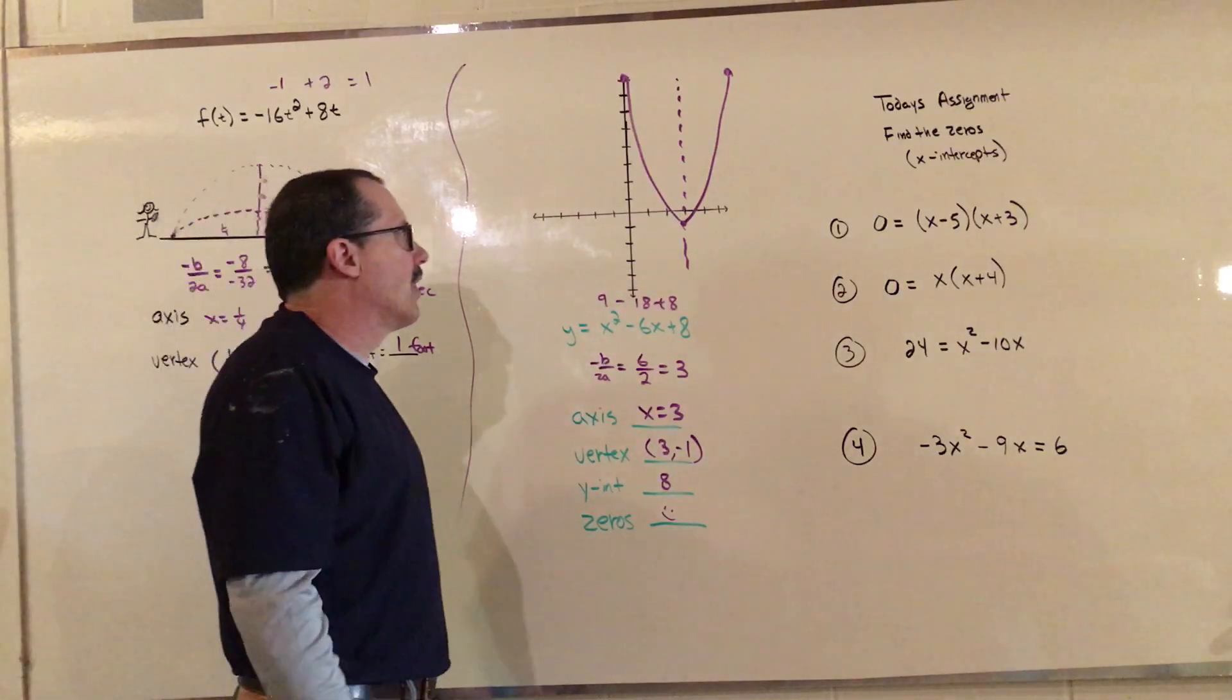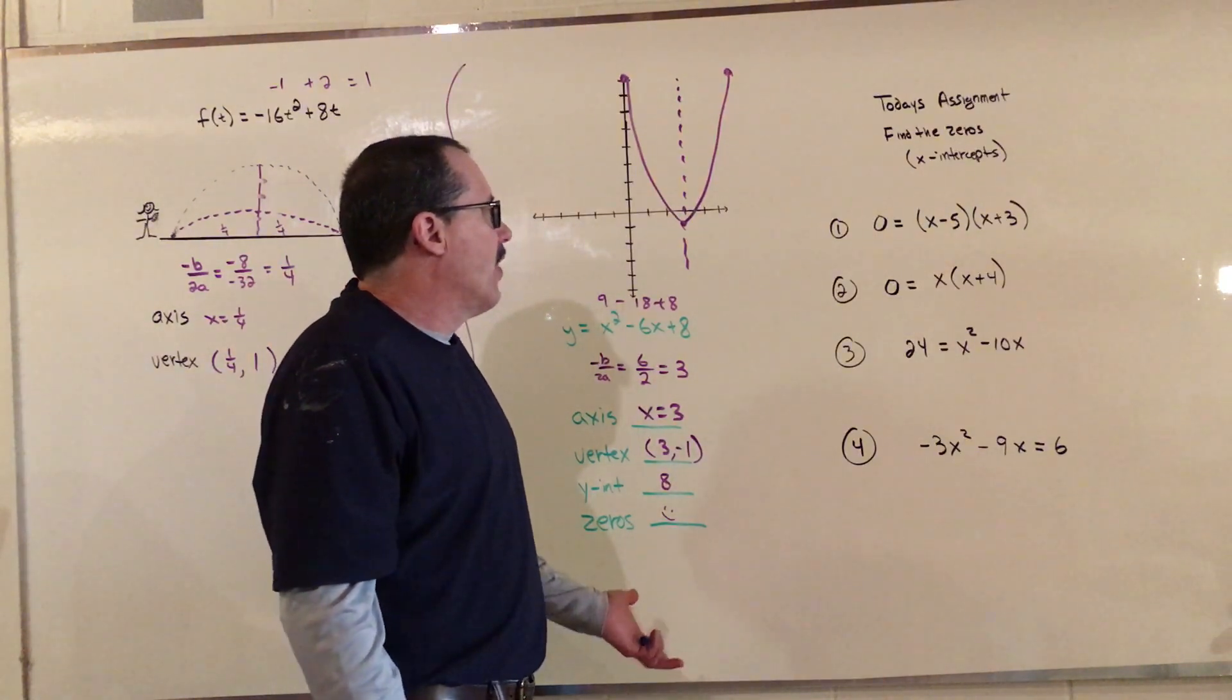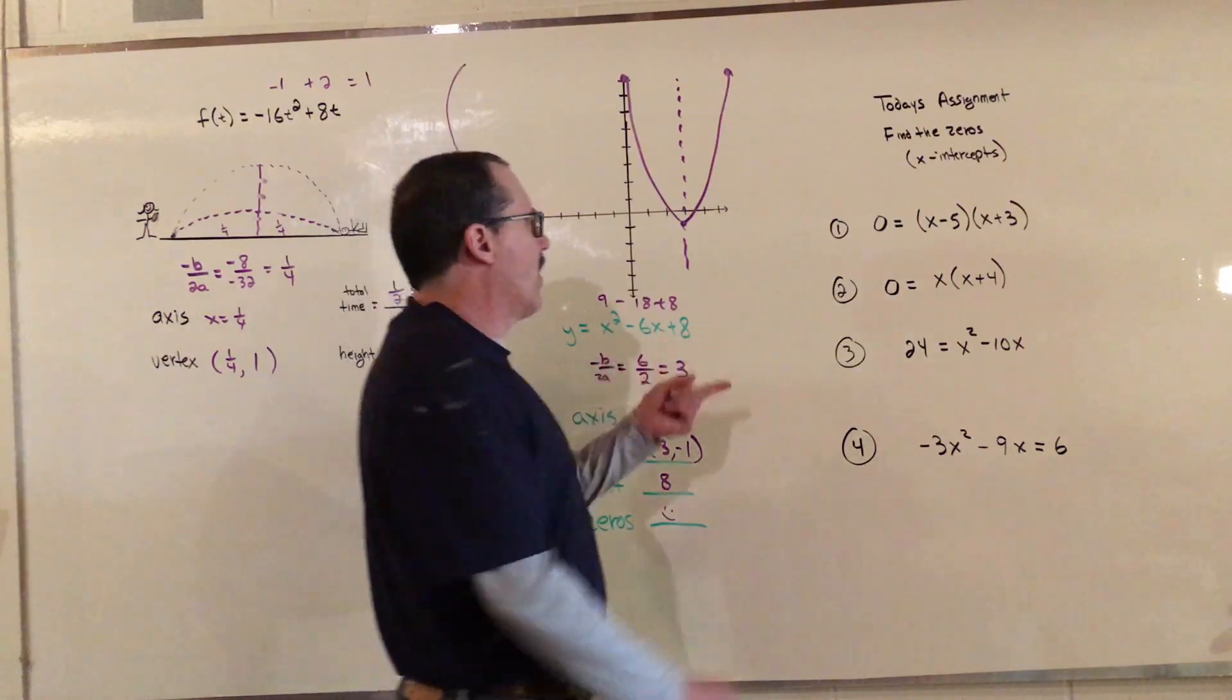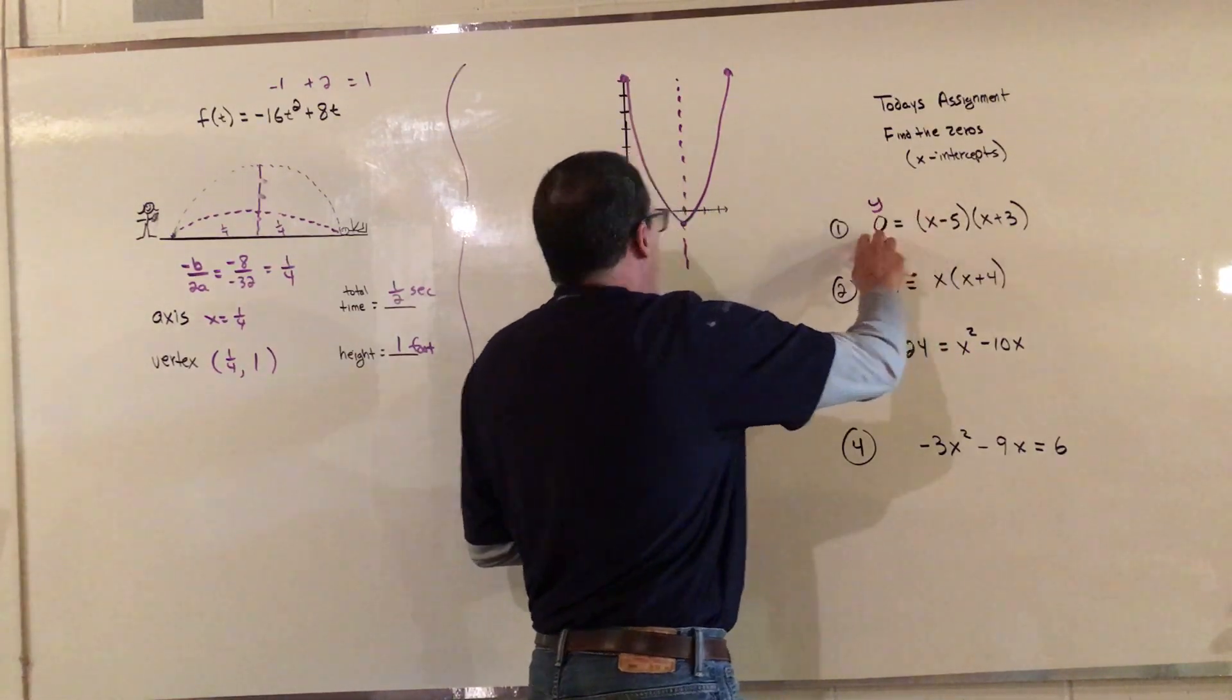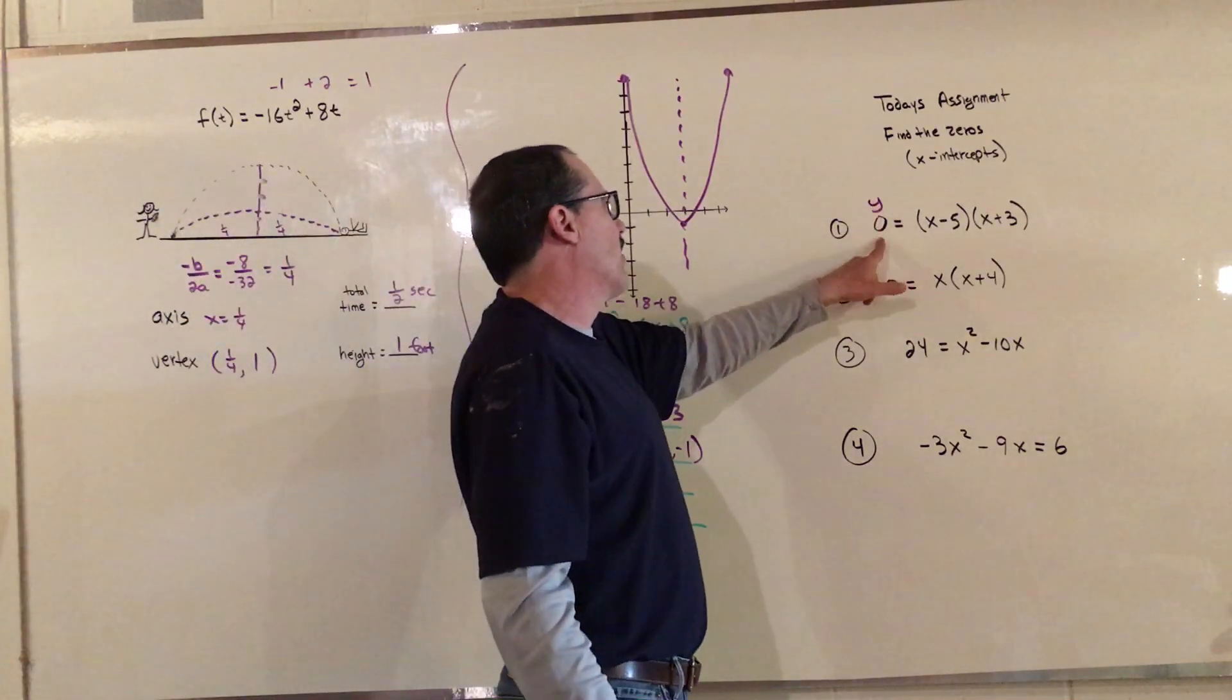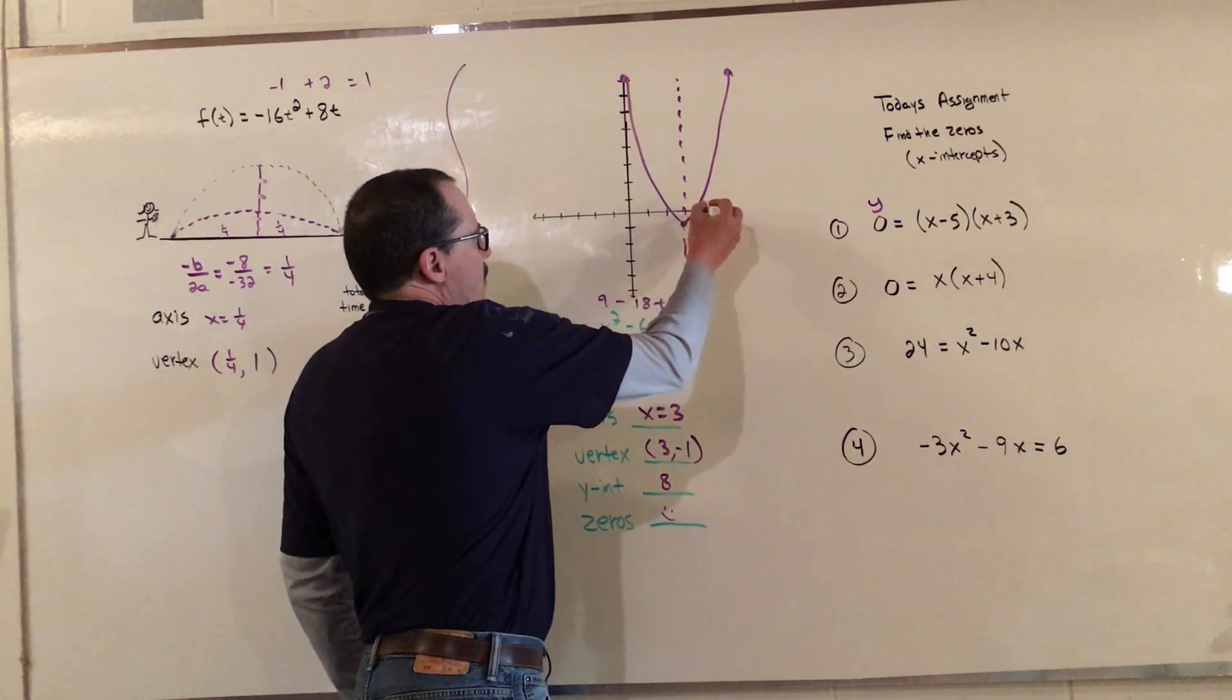I think today's assignment is going to be pretty hopefully easy for you guys. All you have to do is find the zeros, which is the x-intercept. In the book they're going to write 0 equals x minus 5 times x plus 3. We usually write y equals that or f of something equals that. So what they're saying is the y value is 0. If you go back and look at this graph, where the y is 0, that is where it's going to cross the x-axis.